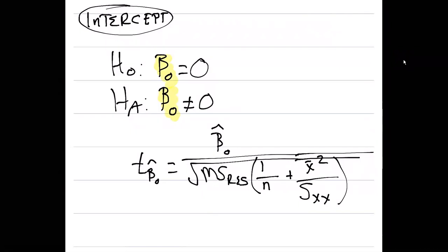The test statistic here is quite similar. We use the same values, except we'll use beta zero hat in the numerator. We'll use the residual mean square in the denominator. We need to know n, the number of samples. We need to know x bar. And we need to know, again, s sub x x. Once we have these values, we can begin to conduct a hypothesis test for the intercept in this relationship.